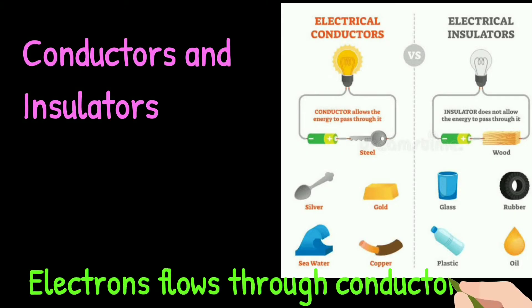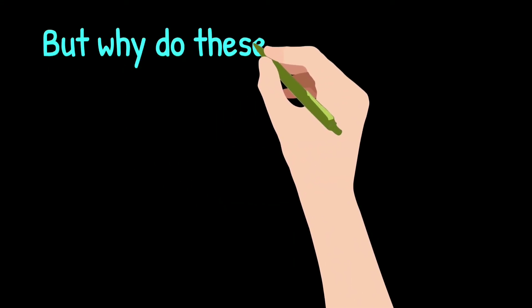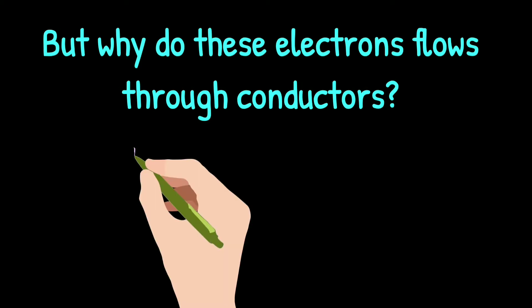Electrons flow through conductors, that is, they possess more free electrons, whereas insulators do not possess free electrons. But why do these electrons flow through conductors? What are electrons?